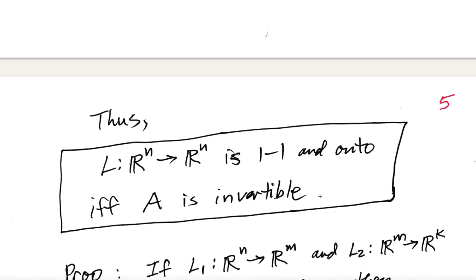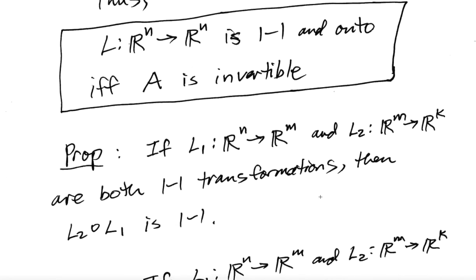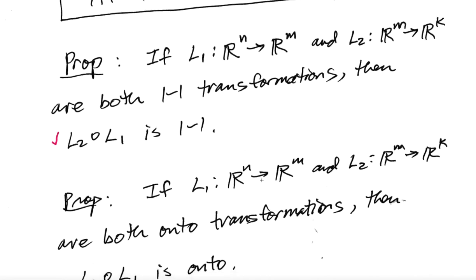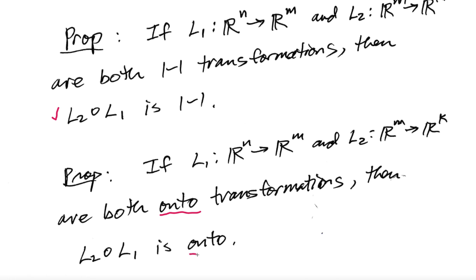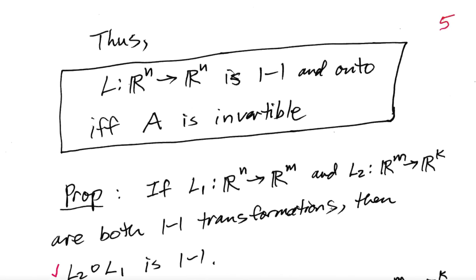Here are a couple of quick propositions to work out. First: if L1 maps R^n into R^m and L2 maps R^m into R^k are both one-to-one transformations, then their composition is also one-to-one. Second: if both transformations are onto, then the composition is also onto. Go ahead and give those a try as exercises.